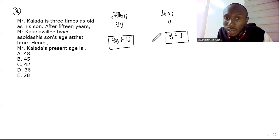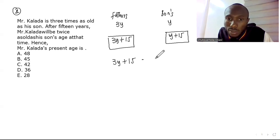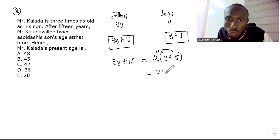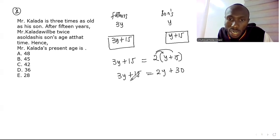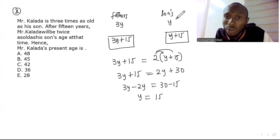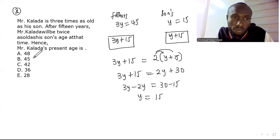Algebraically: 3y + 15 = 2(y + 15). Distributing the 2 gives 2y + 30. Collecting like terms: 3y − 2y = 30 − 15, so y = 15. The son's current age is 15, and the father's age is 3 × 15 = 45. The answer is B.